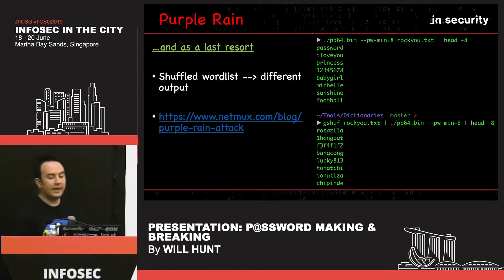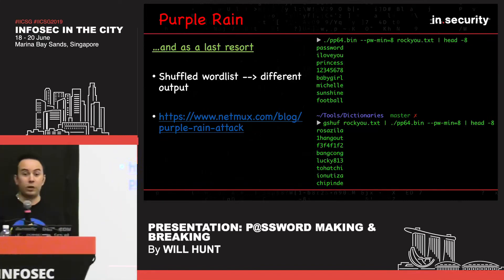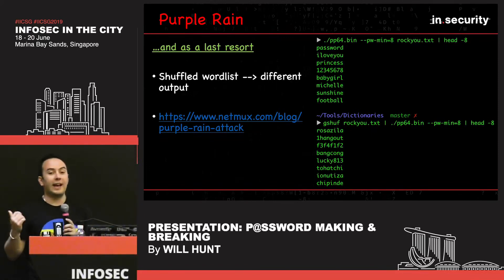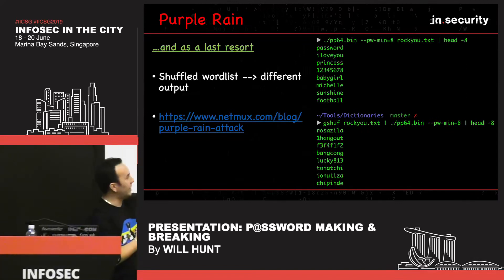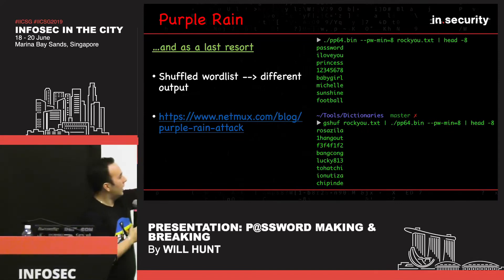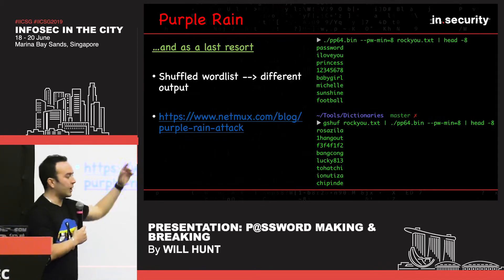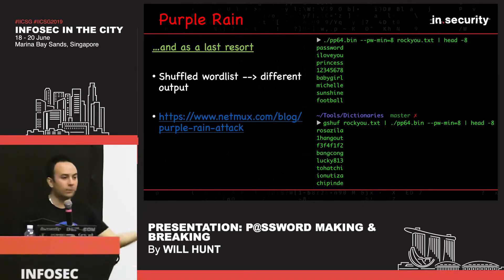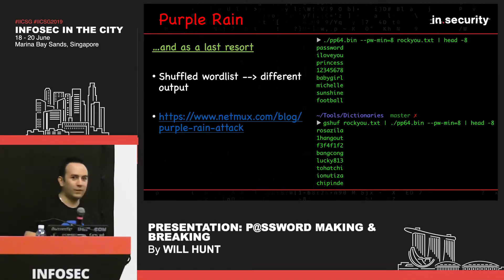Purple Rain: massive shout-out to NetMux for this. It builds on the Prince attack but shuffles your word list first. What he found was that if you shuffle RockYou before passing it to Prince Processor, you get completely different candidates each time. Shuffle, run for 12 hours, Control-C, start again — you will generate different password candidates every time. These are designed for infinite run time and are fantastic for targeting passwords that traditional dictionaries and rules won't catch.